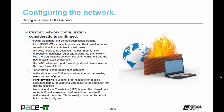Let's talk about firewall placement and configuration. Most small office, home office WAN connection devices offer firewall services as well as connection to the internet, and these will be sufficient in most cases. But if a DMZ needs to be deployed, the best method is to introduce an additional router and firewall into the network, with the DMZ residing between the WAN equipment and the new router-firewall combination. If a DMZ is deployed, port forwarding should also be used at the router-firewall level. Port forwarding is used to direct requests for specific resources — like a request for a web page — to the computer that has that resource, so the request comes into the firewall and is routed to the appropriate place.